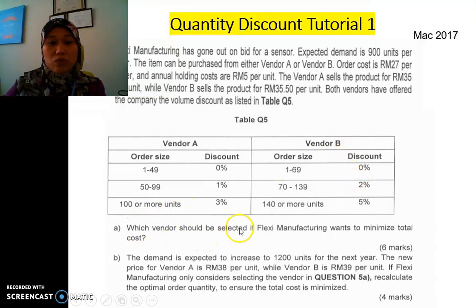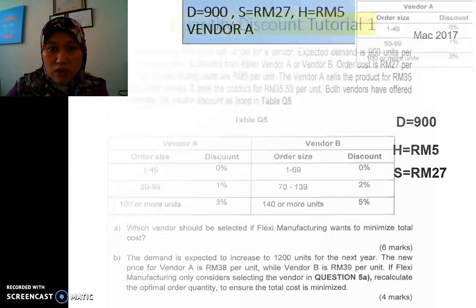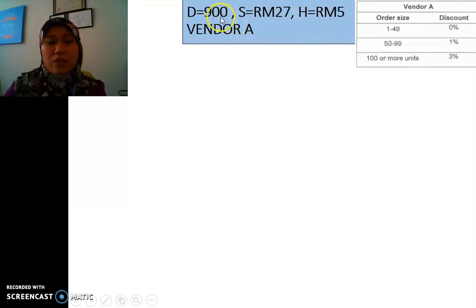We have to decide which one is the best to get the minimum total cost for inventory. Is it A or B? For part B, there is some change on the demand. And again, we need to decide which one is the best. So we start with all the information given to us. We have demand, annual demand of 900. We have H, RM5. S, we have RM27. And we start with vendor A.